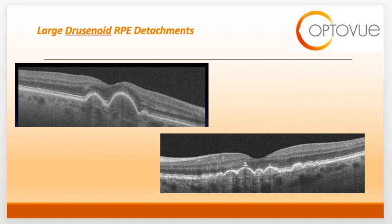This slide shows larger PEDs. Note the width and height differ from the previous slide. Once they get this large, you start to worry about the development of choroidal neovascular membrane and advanced AMD.